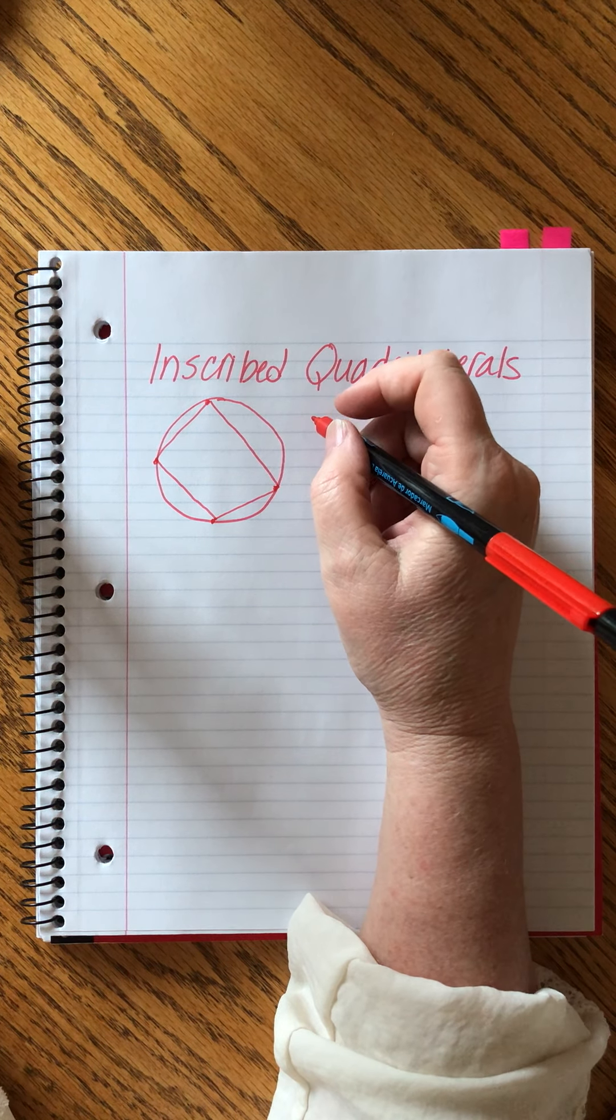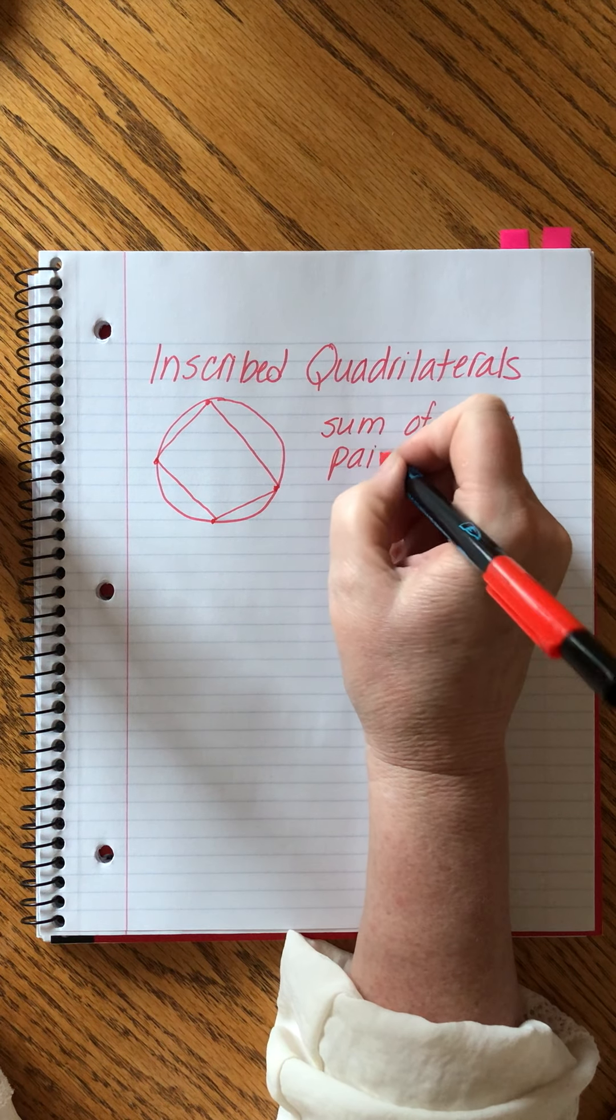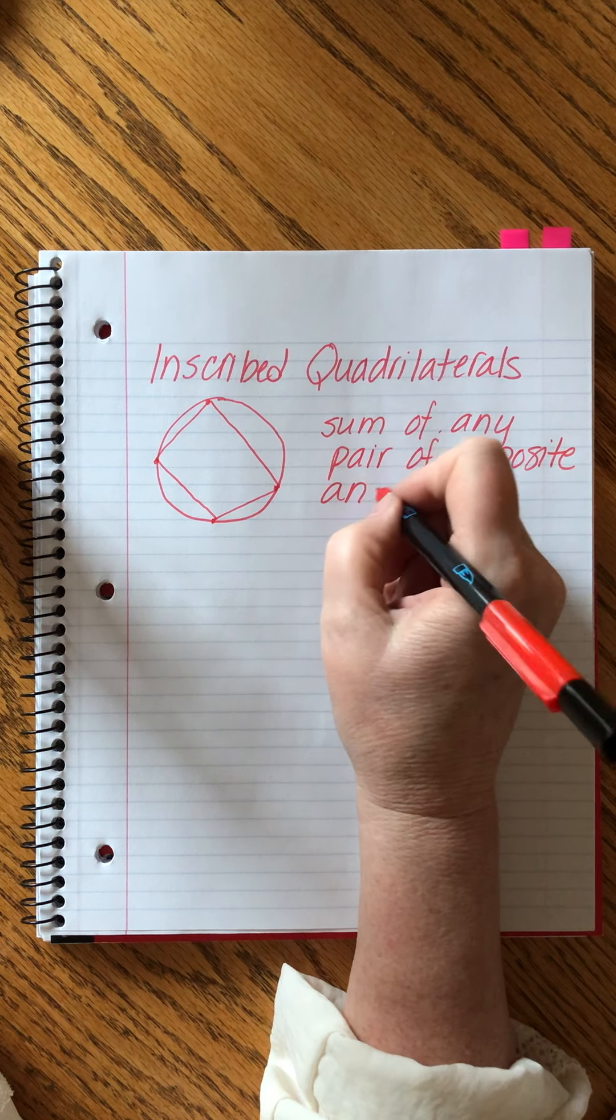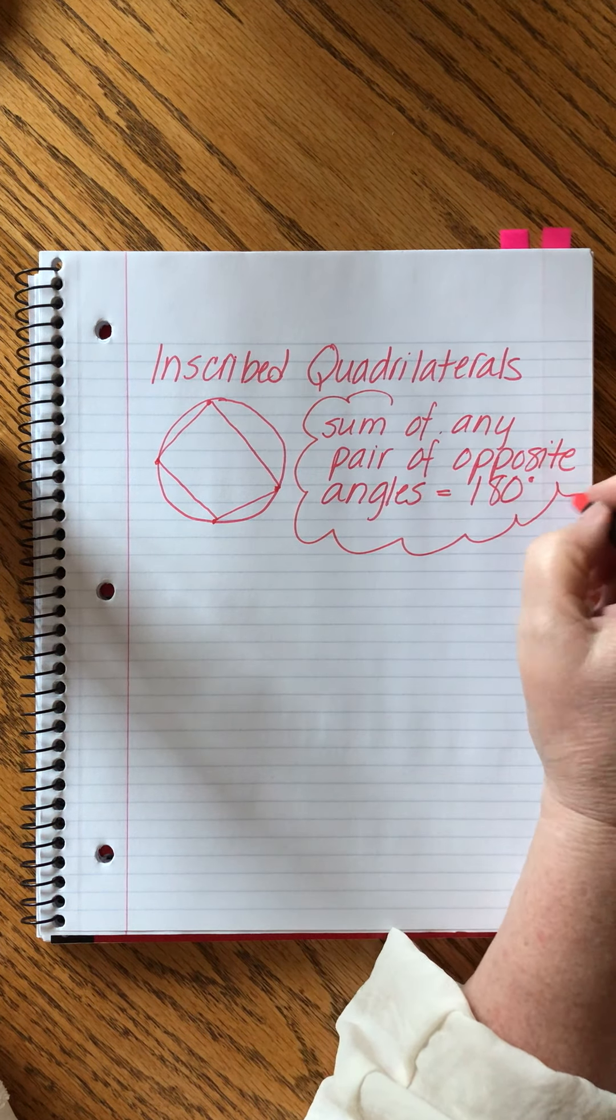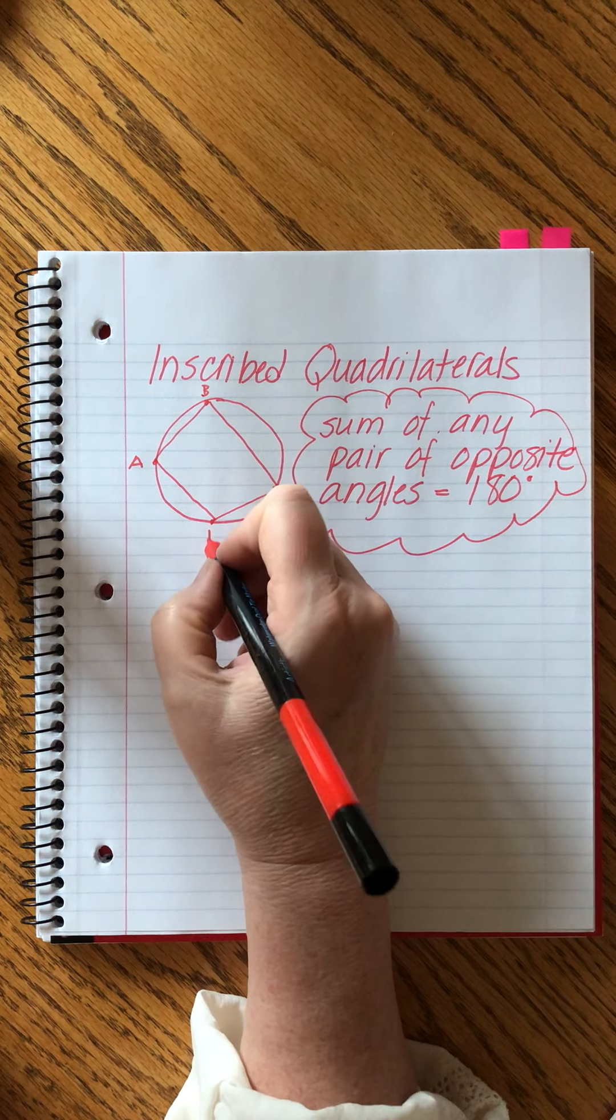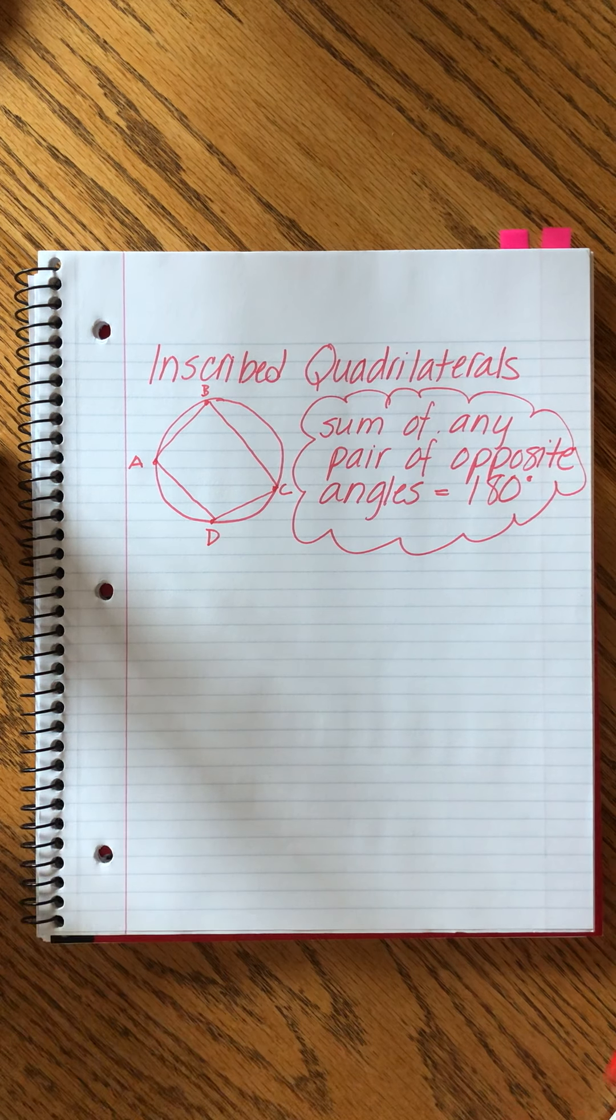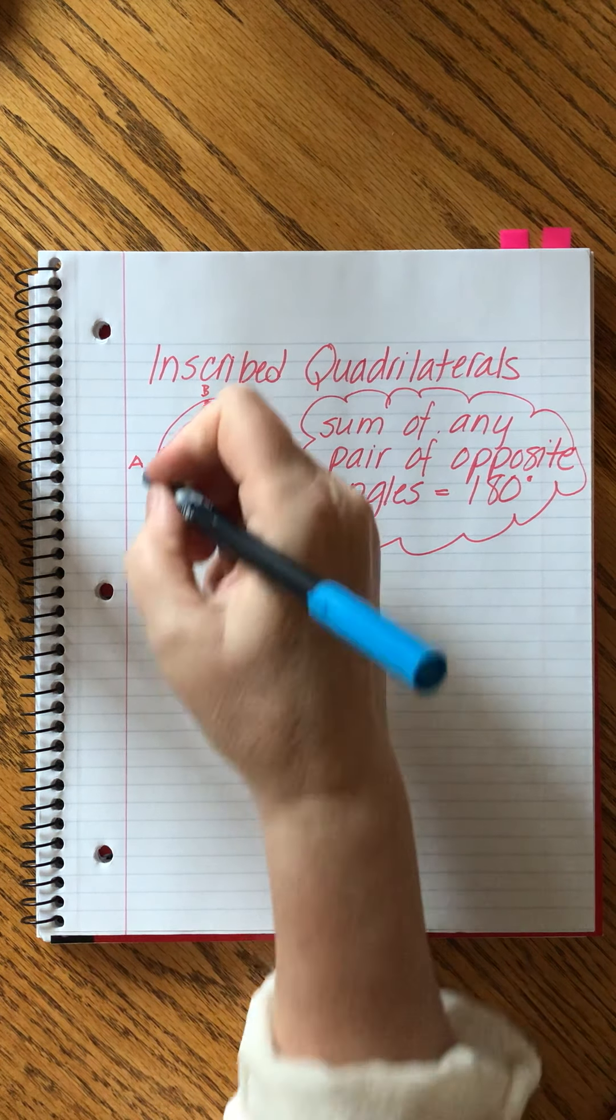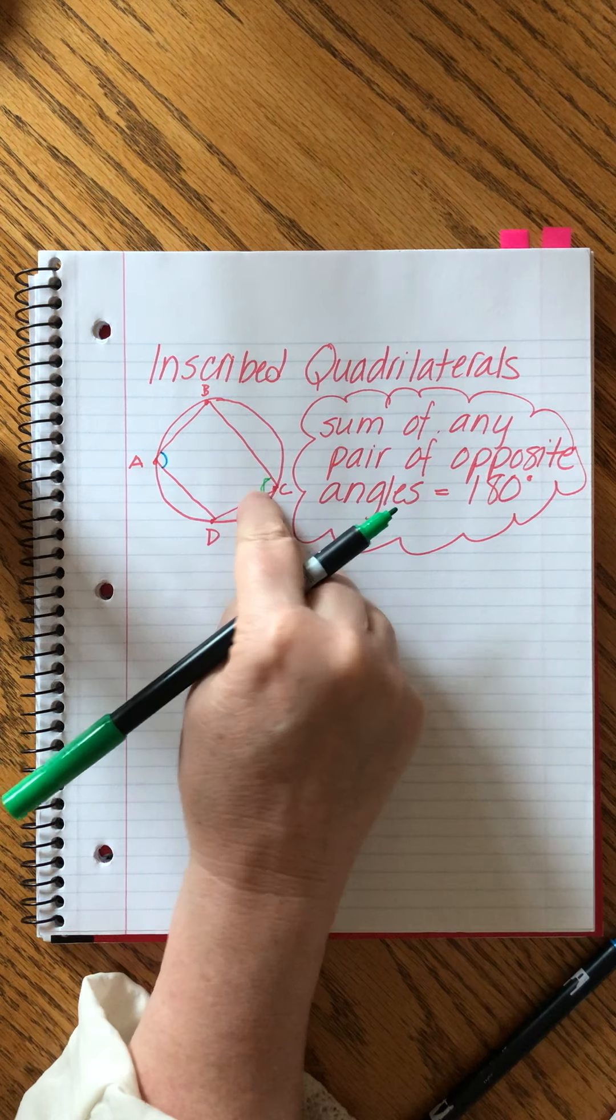And here's something fancy: inscribed quadrilaterals, sum of any pair of opposite angles equals 180. I'll tell you what this means. Let me put letters on this. Please feel free to pause me anytime that you need more time to write. I try to give you a little time, but I know I'm not always the best on that. Let's take two pairs of opposite angles. I want to look at A and C. They're opposite angles in a quadrilateral.